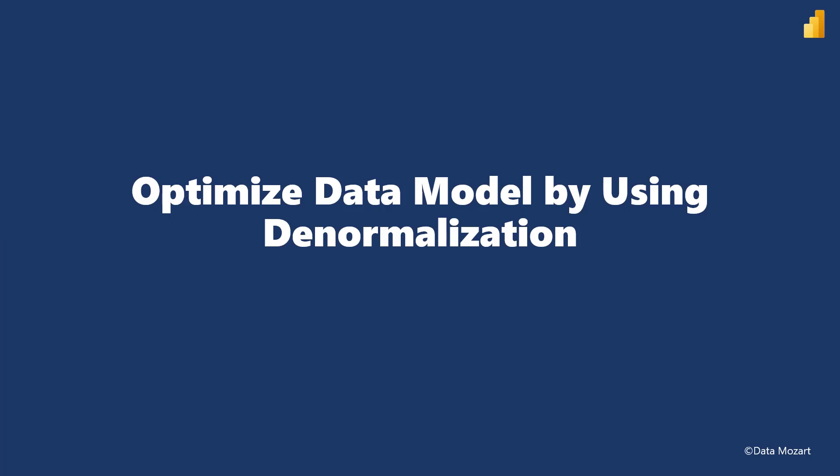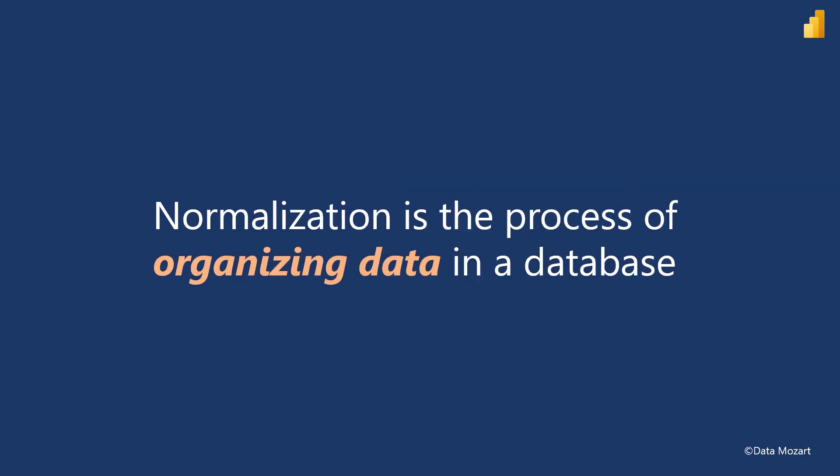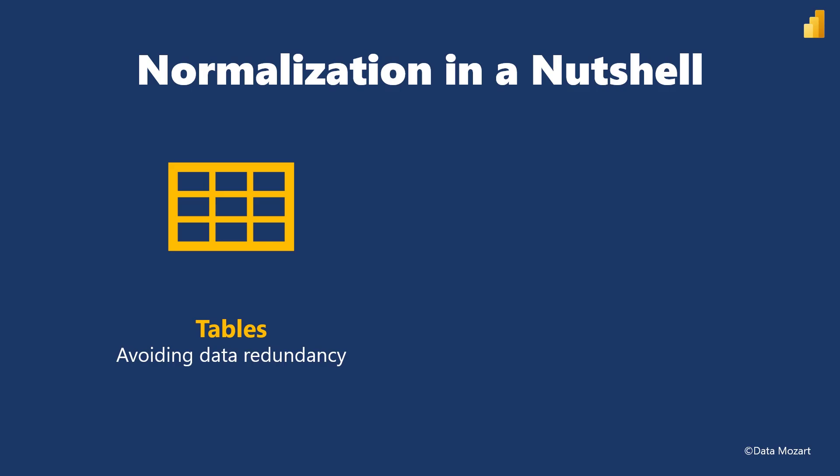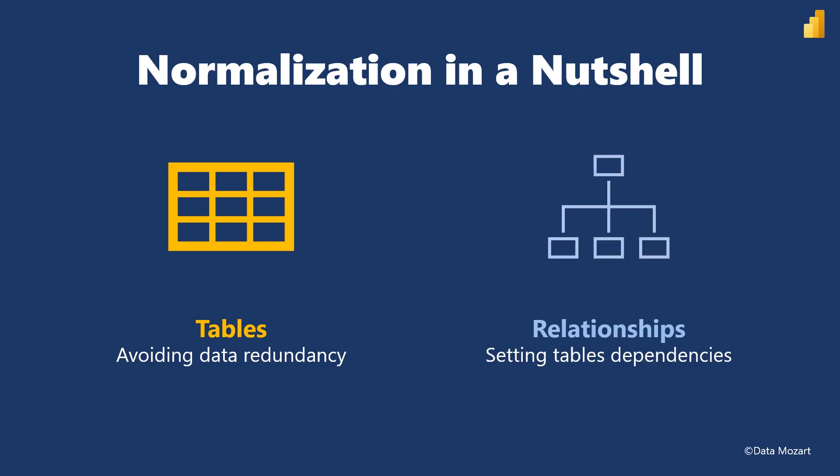But before we explain denormalization, let's first focus on understanding normalization as a base concept in relational data workloads. Normalization is the process of organizing data in a database. The normalization process implies creating a specific data model. As our data model consists of tables and relationships, normalization enables you to avoid data redundancy within tables while at the same time setting consistent table dependencies through relationships.